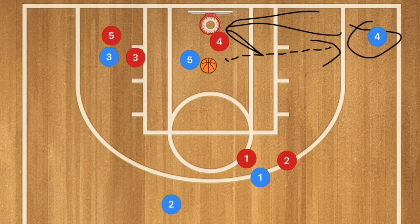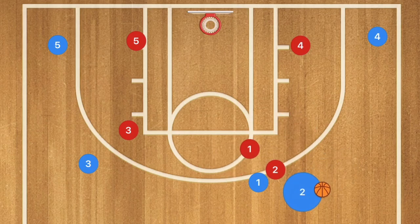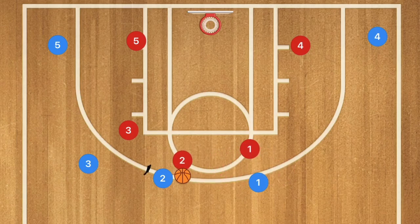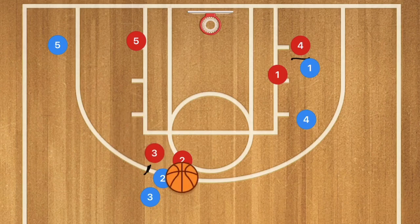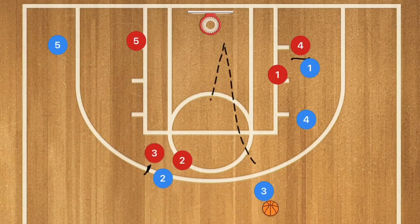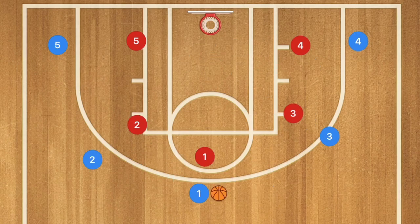In this second play, we're gonna have a dribble handoff between one and two. Two gets the ball and does another dribble handoff with player three. At this time, player one sets a screen down for player four, who rolls towards the basket. Player three gets the ball and could take that shot, pass to player four for the mid-range shot, or drive towards the basket.